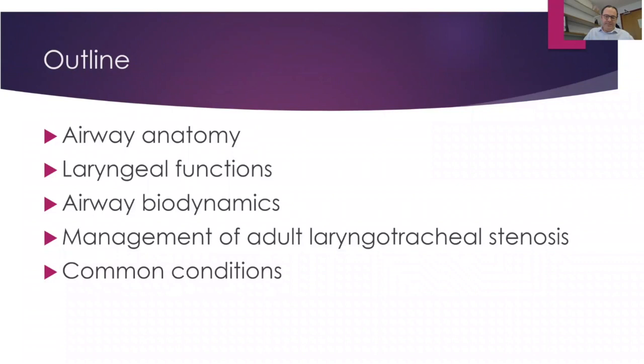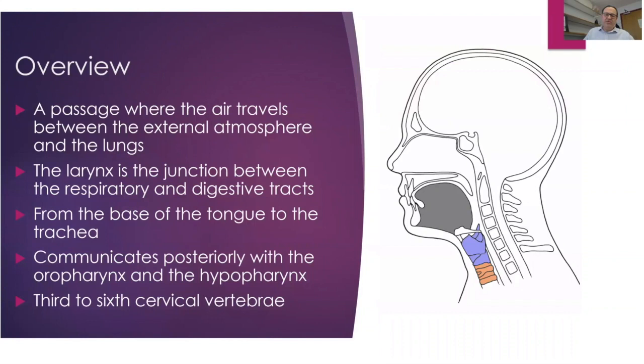The airway is the passage where air travels from the outside atmosphere into the lungs. It's a series of cavities that varies in complexity — for example, the nose and the larynx are more complex structures with mobile parts, whereas the trachea and bronchi are more of a cylindrical-shape conduit. The larynx itself is the junction between the digestive tract and the respiratory tract. It sits in the anterior neck between C3 to C6 and opens posteriorly on the hypopharynx, extending from the tongue base to the trachea.